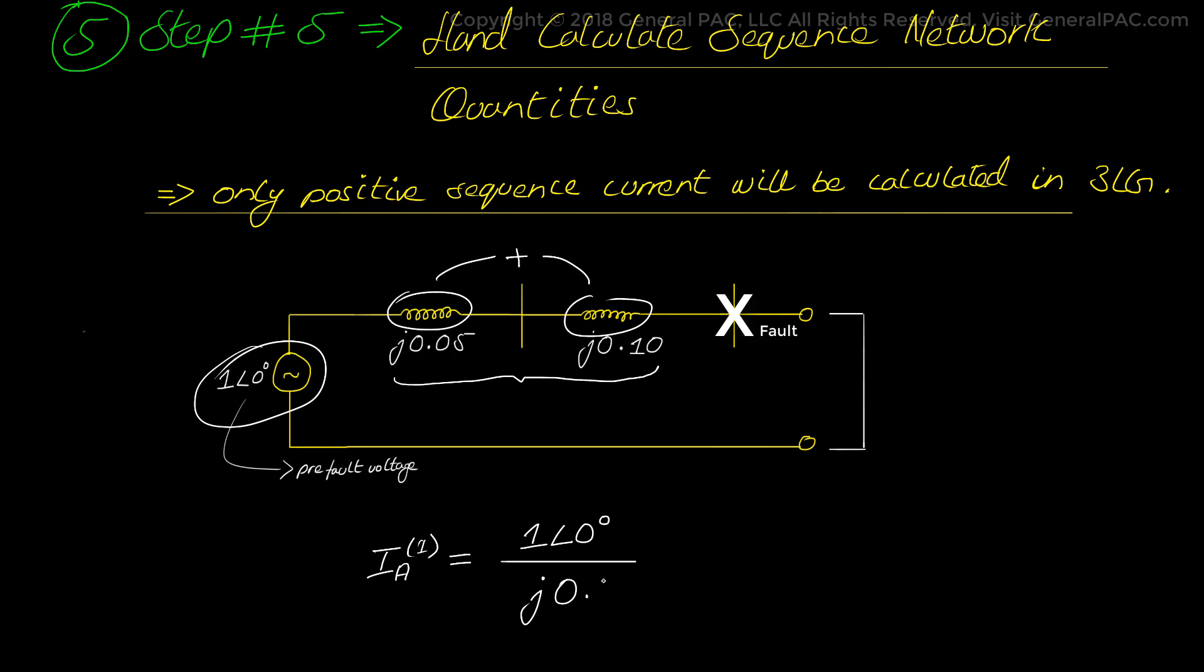After dividing the source voltage with the total per unit impedance, we get the positive sequence current as -j6.67 per unit values. Now remember this is complex math with imaginary numbers and although it may not seem important, the negative sign does make a difference here.